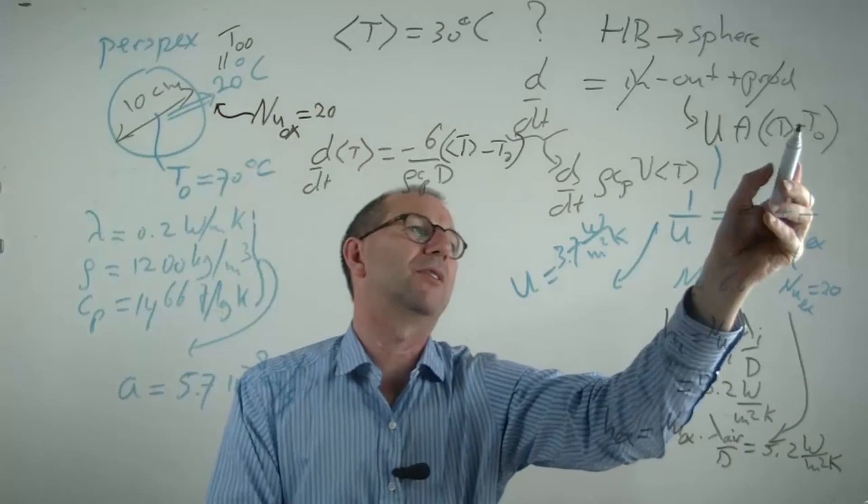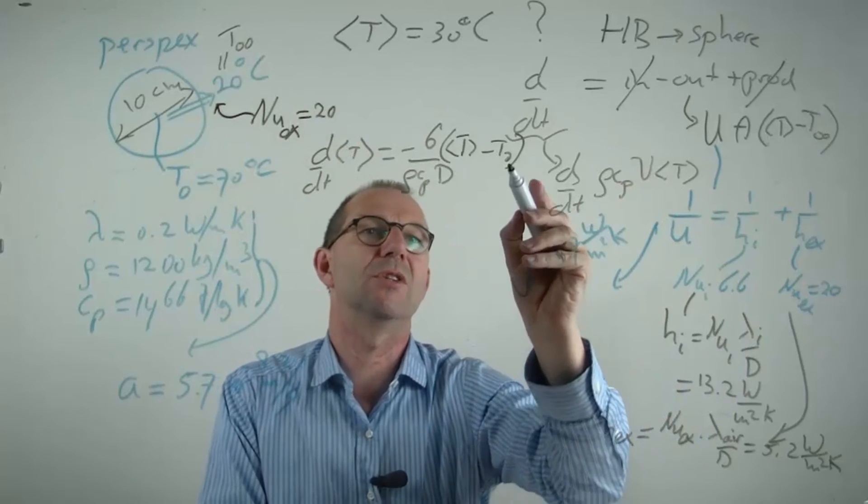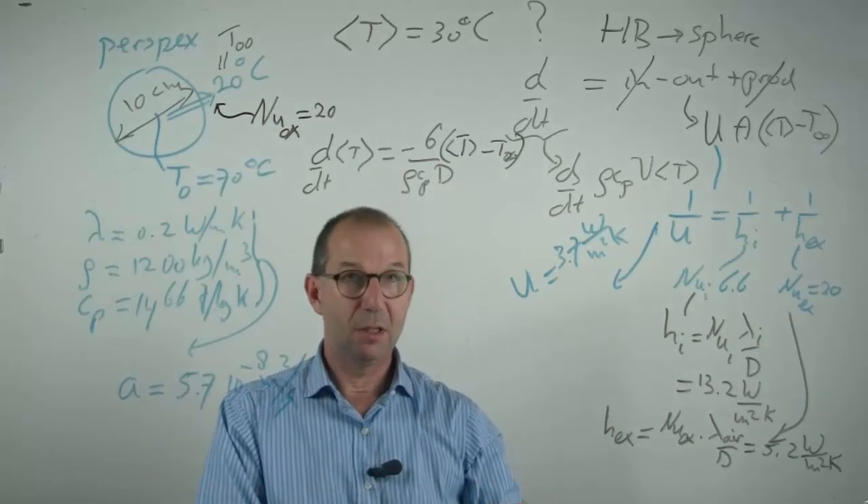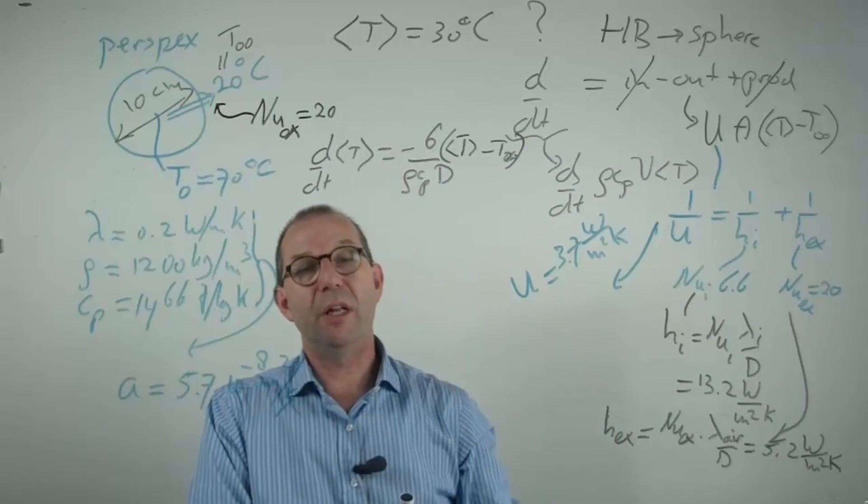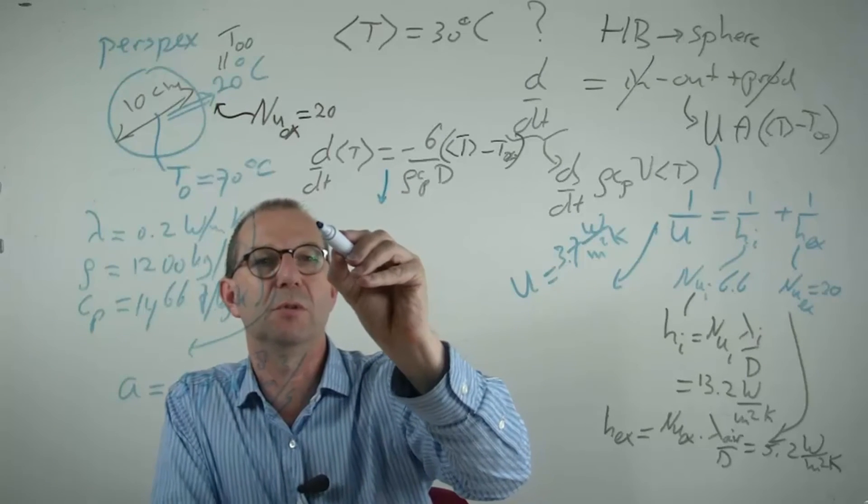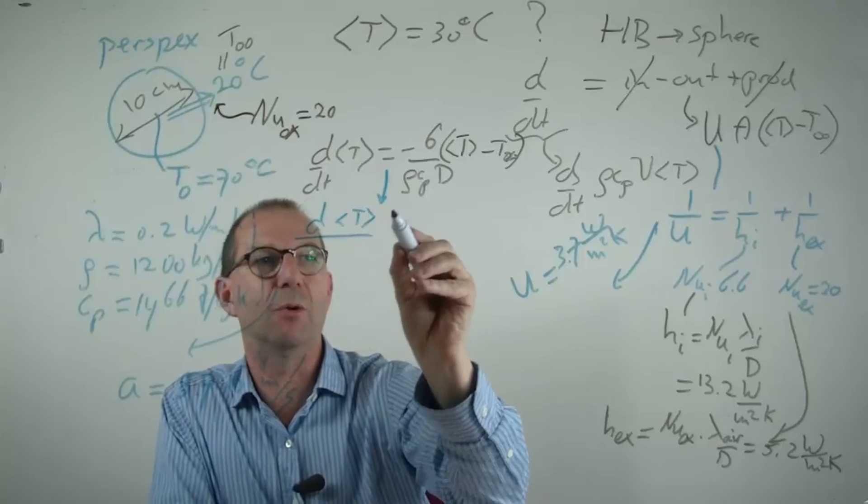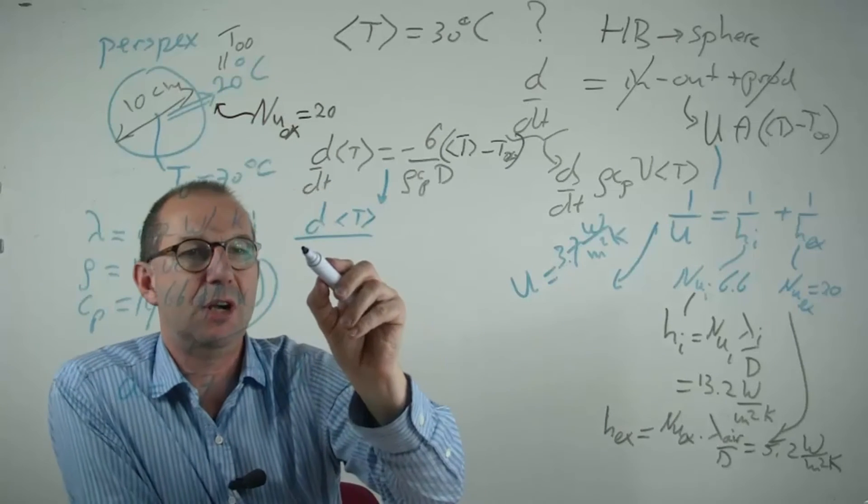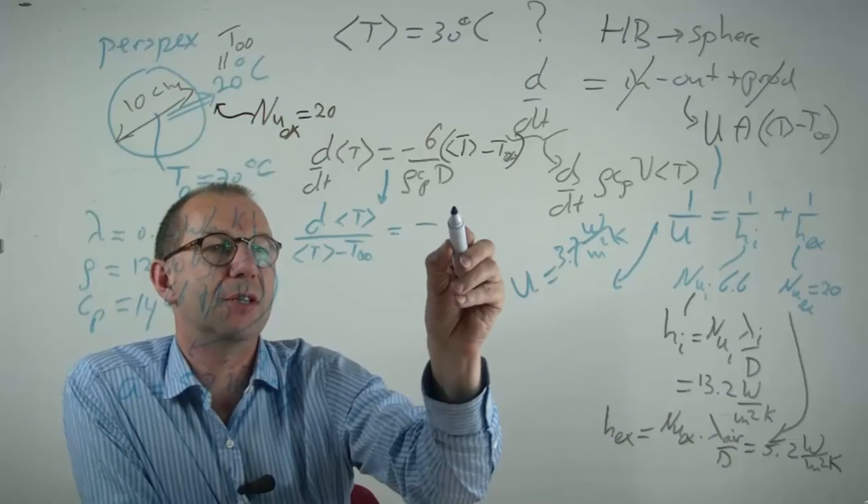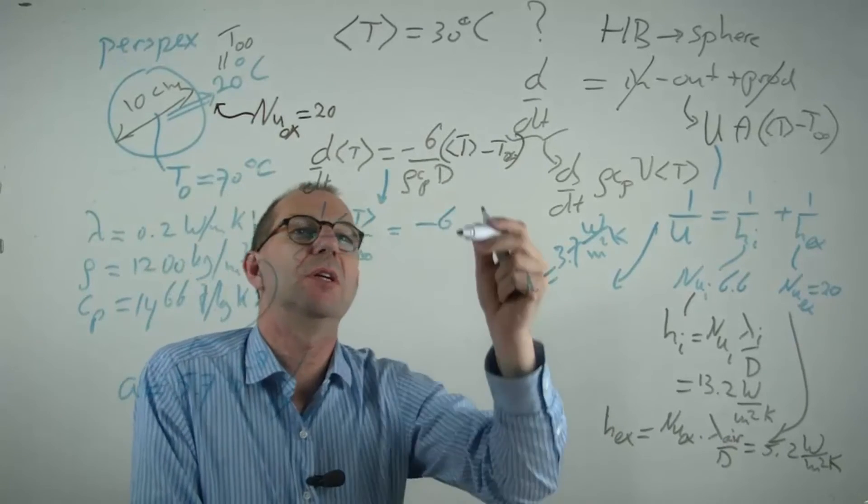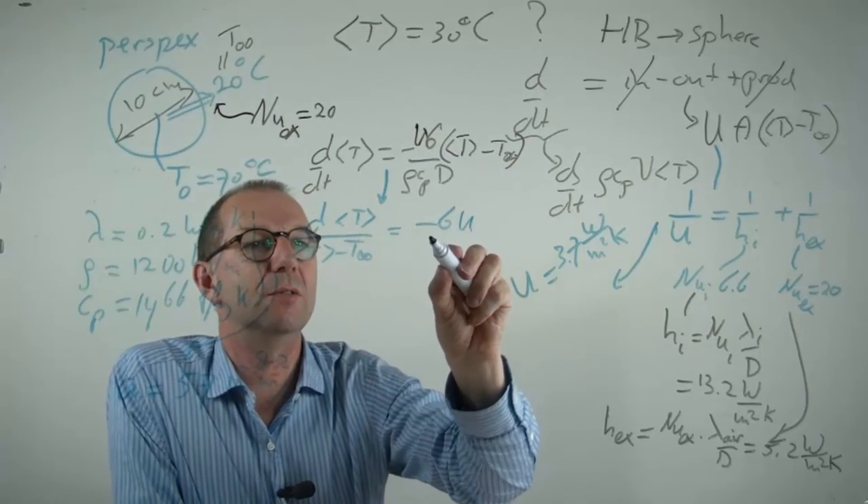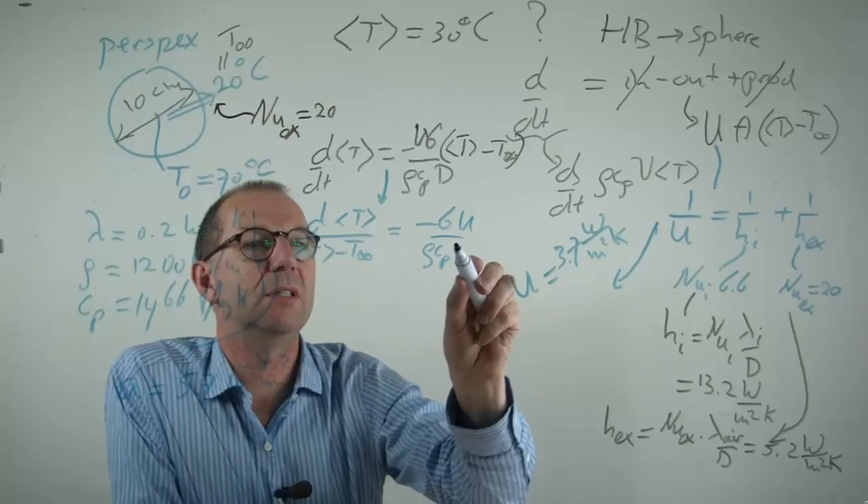So this is T. Well, I better call this infinite. Let me rewrite it far away. It's an easier notation. Okay, can I solve the differential equation? Yes I can. I'm going to separate the variables. So everything with temperature goes to this side. Everything else goes to the other side. I've got the U here that I need to put in. 6U over ρ, Cp, D, dt.